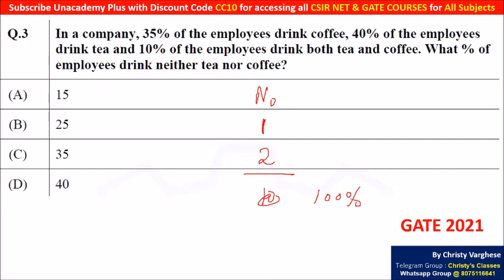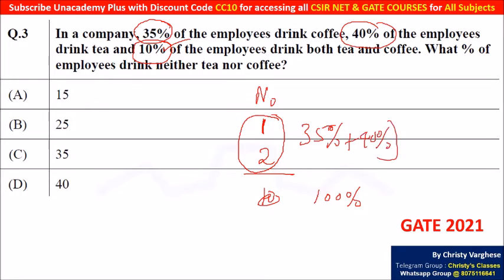The 35% coffee drinkers includes the both-drink people, that is the 10%. Similarly, the 40% tea drinkers also includes that 10%. So for one-drink and two-drink people combined, it's 35% plus 40% minus 10%, because that 10% is counted in both. To avoid repetition, you subtract that 10%, giving 75% minus 10% equals 65% — these are the people who drink at least one drink.